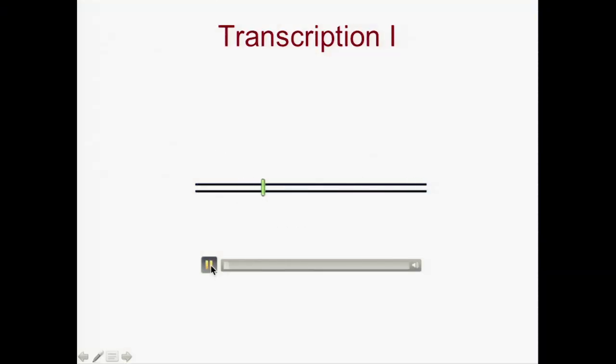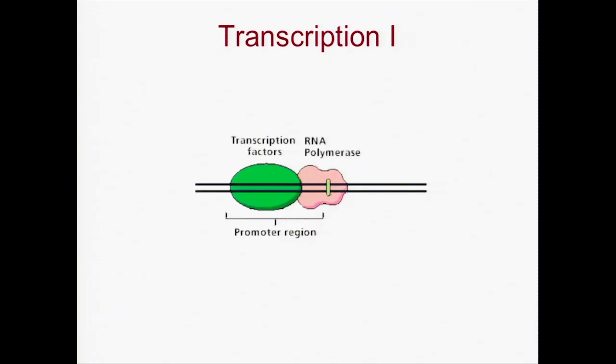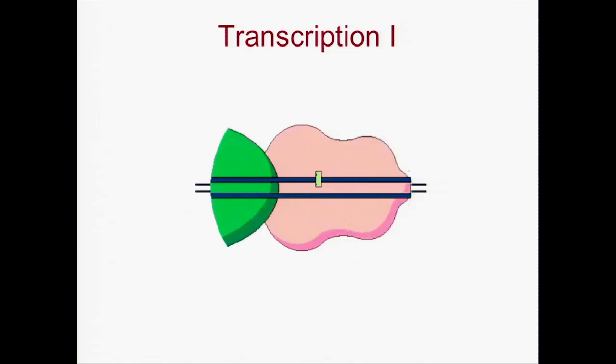The start site is part of a region on the DNA strand called the promoter region. Transcription factors recognize and bind to specific base sequences in the promoter region. Transcription factors help the enzyme RNA polymerase bind to the promoter region at the start site. RNA polymerase immediately separates the two DNA strands.